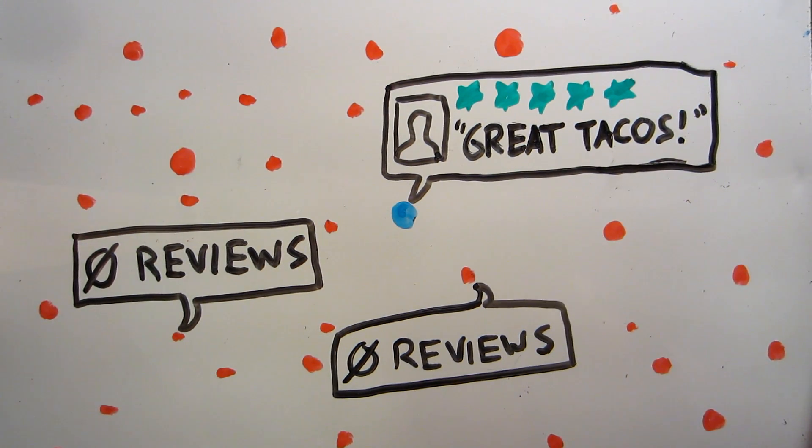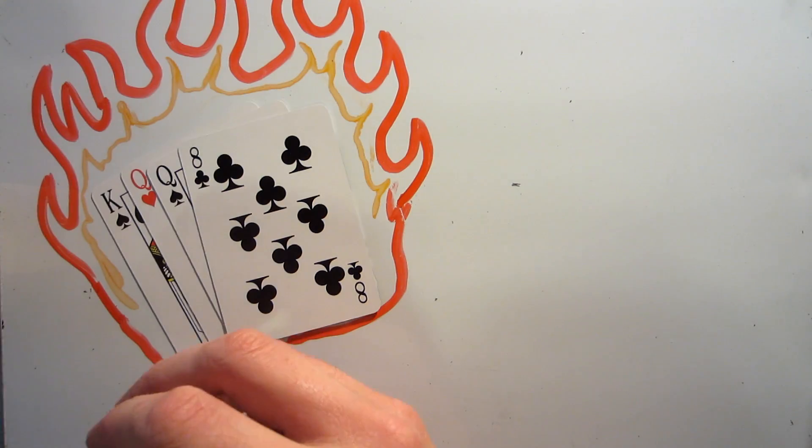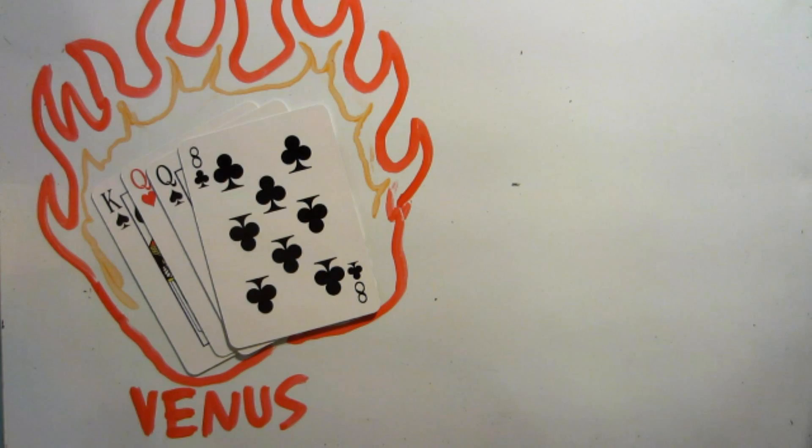This leads us to a different question that I think is actually more interesting. How special is the Earth itself? In the deck analogy, how likely is it to draw those four aces? We can imagine having drawn this hand, where the Earth would be closer to the Sun and too hot for life to develop, like Venus. Or this hand, where the Earth would be further from the Sun and too cold, like Mars.